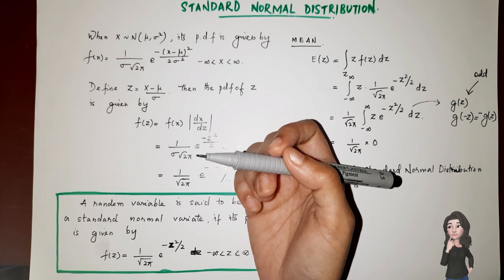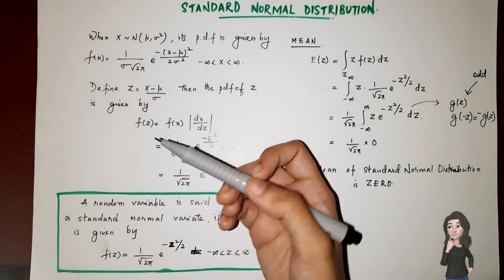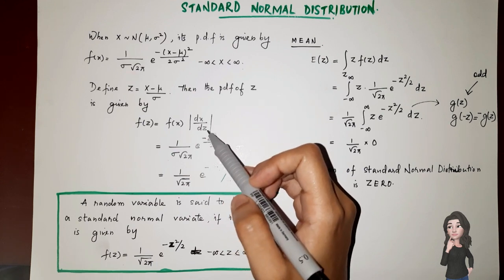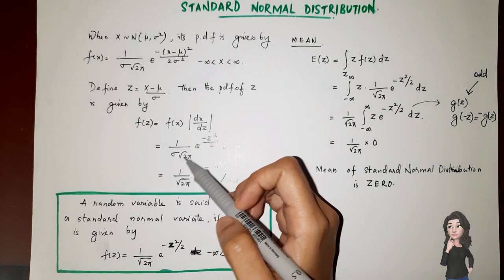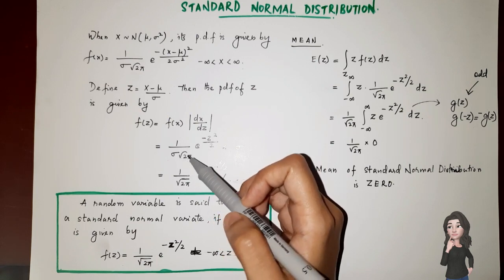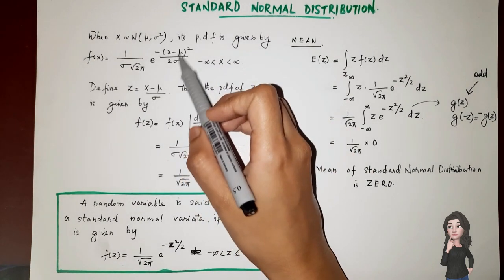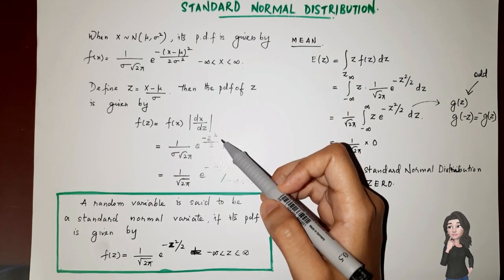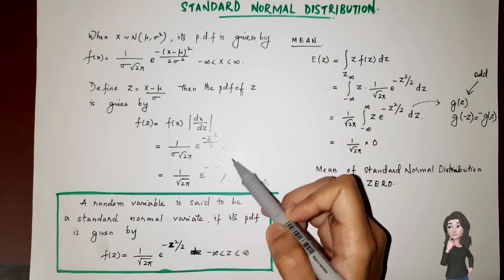Our task is to find the distribution of z, or the PDF of z. In order to find the PDF of z, we use the Jacobian transformation. So to find this PDF, I write f(x) in terms of z multiplied by |dx/dz|. The modulus |dx/dz| is σ, and f(x) in terms of z is 1/(σ√(2π)) × e raised to minus z²/2, because (x minus μ)²/σ² becomes z². Cancelling σ, I get 1/√(2π) × e raised to minus z²/2.